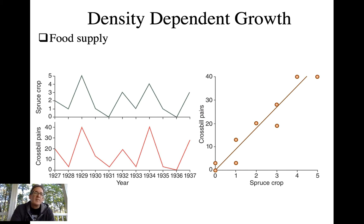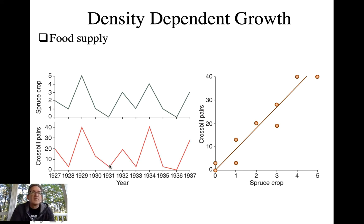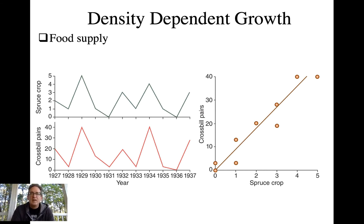Another example looking at crossbills: the top left shows yearly variation in spruce crop cones that crossbills feed on. In a good year for spruce, it's a good year for crossbills; bad years for their food source mean crossbill populations suffer because of increased death rates and decreased clutch production rates. The figure on the right shows the same thing — the better the spruce crop, the more crossbill pairs you'll have. When there's lots of food, there's less competition, healthier individuals reproduce more, and populations increase.